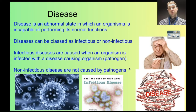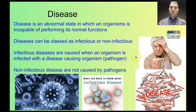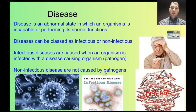A disease is when an organism isn't working correctly — they're in an abnormal state and they're not doing their normal functions well. We can break diseases into two groups: infectious or non-infectious. Infectious diseases occur when you get infected with a pathogen, and that causes the disease. A pathogen is a disease-causing organism, and we're going to look at some different types of that today.